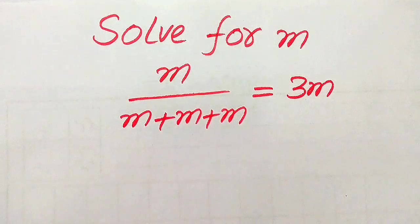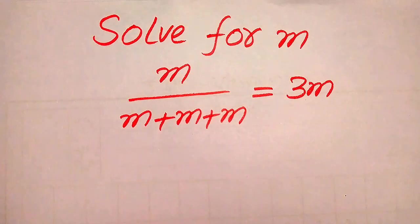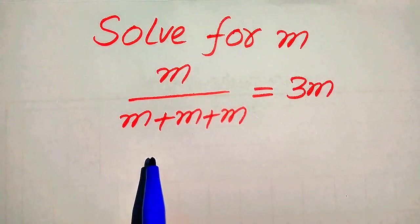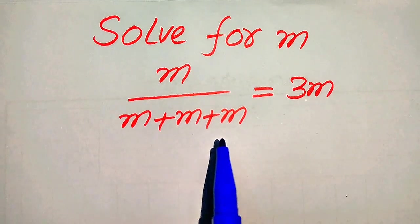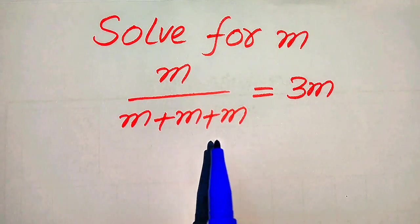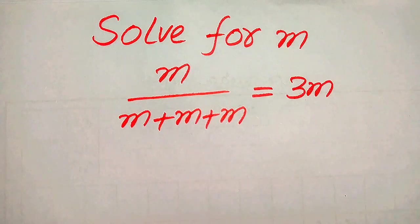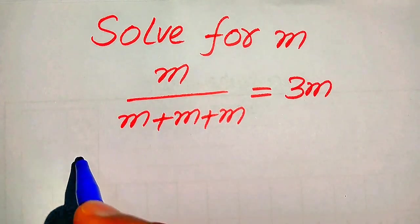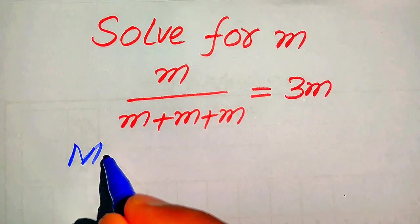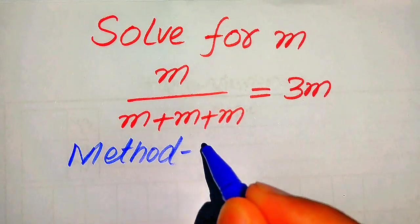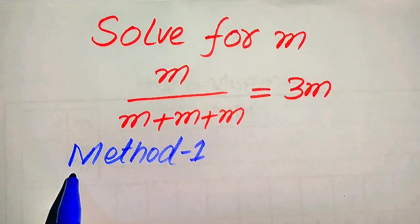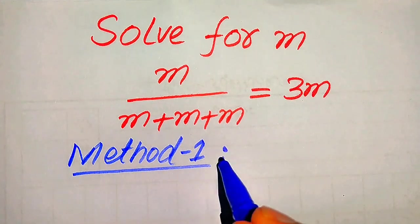Hello everyone. We are going to solve this problem: find the values of m if m divided by (m plus m plus m) is equals to three times of m. We will solve this problem using two methods, and I hope you like both of these methods. If you have any other method in mind, please don't hesitate to write it in the comment section.